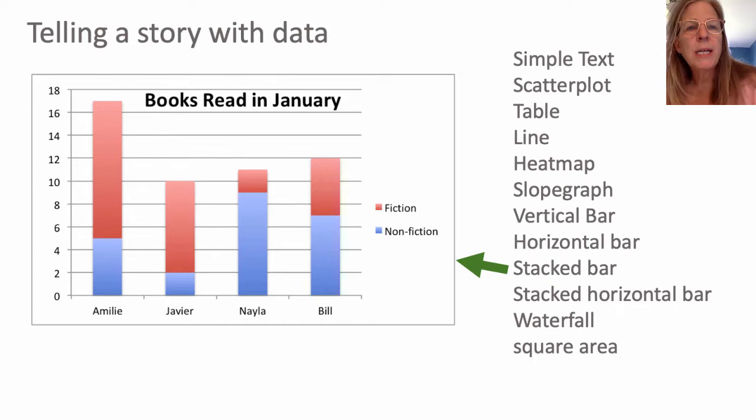A stacked bar chart is another way of showing categories within a total. In this case it looks like they have the different people and what they've read, and then it looks at the difference between fiction and non-fiction. The total stack is important and then the categorization within the stack is also important.